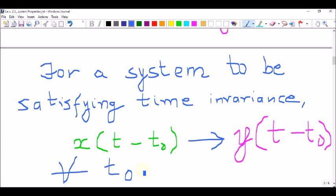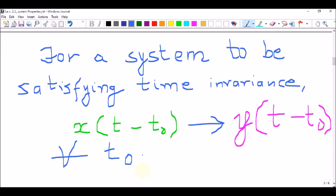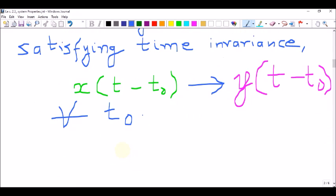For all the shifts t0, the output should be shifted by the same shift as the input. That property is called time-invariance or sometimes it is better known as shift-invariance.